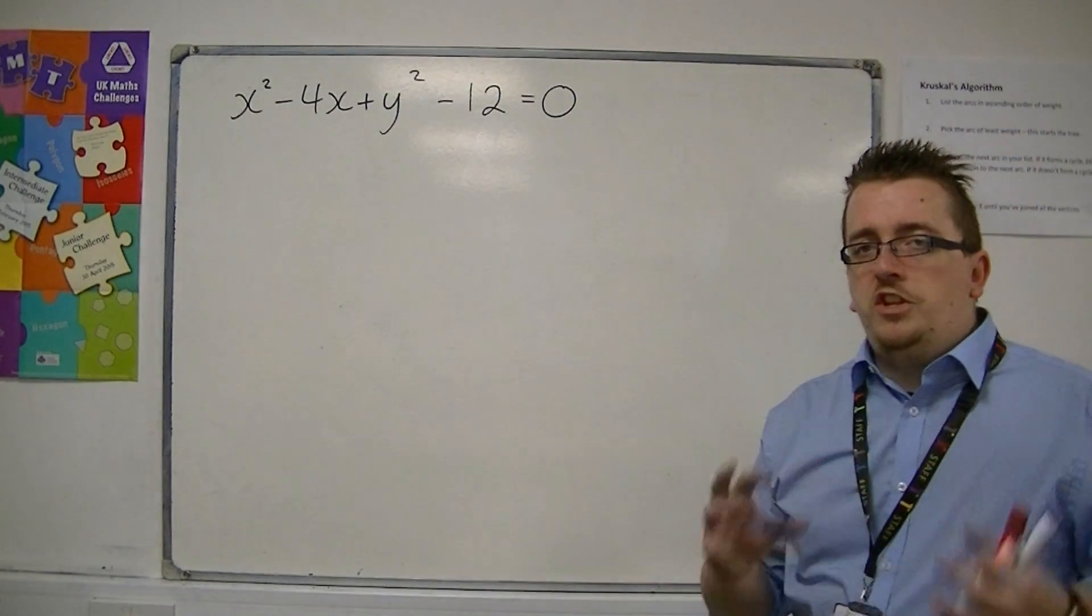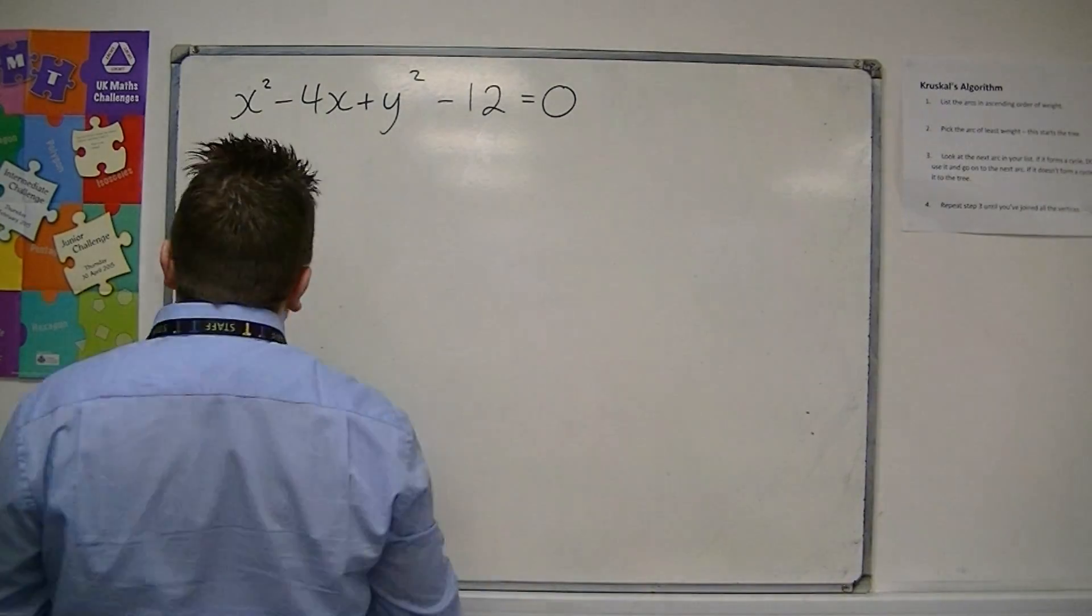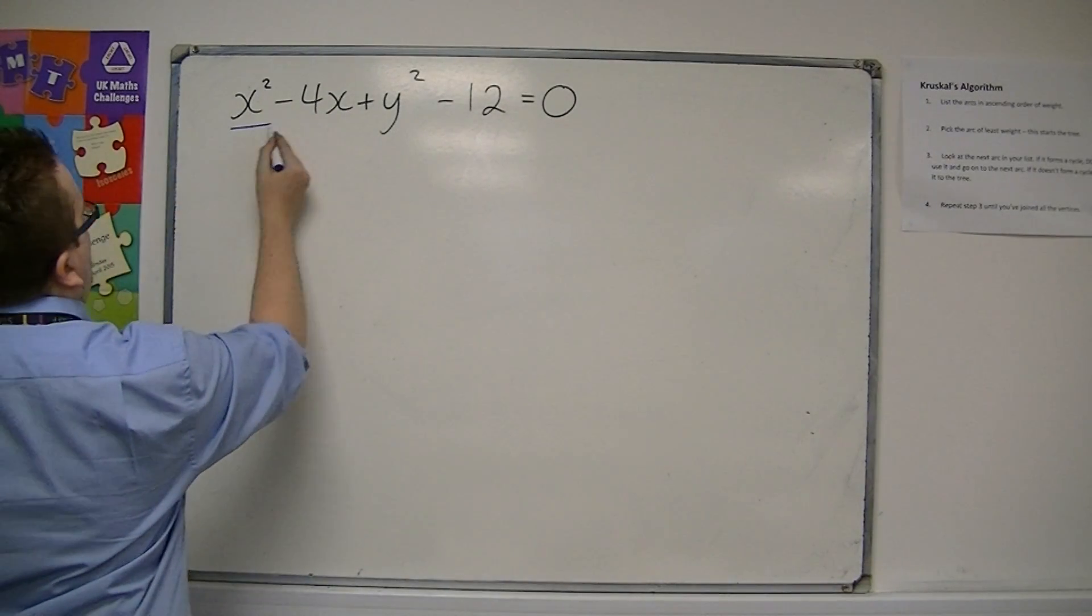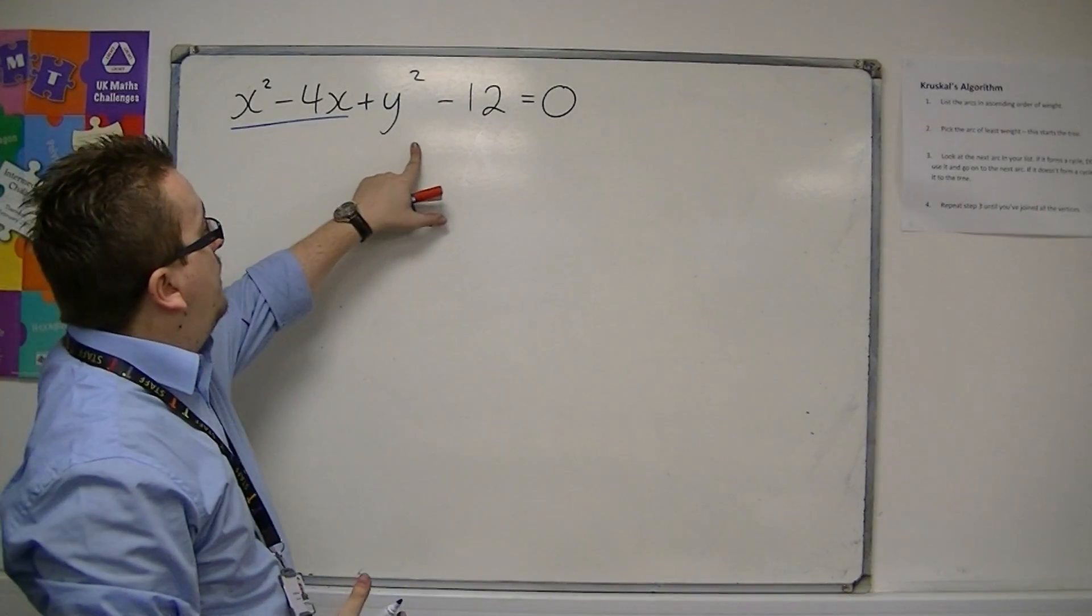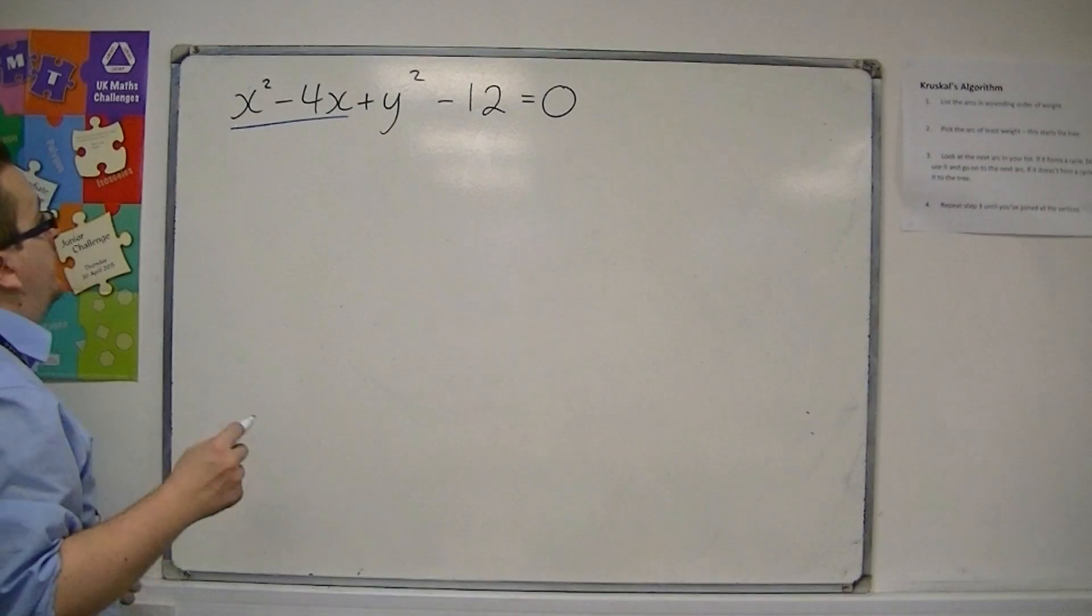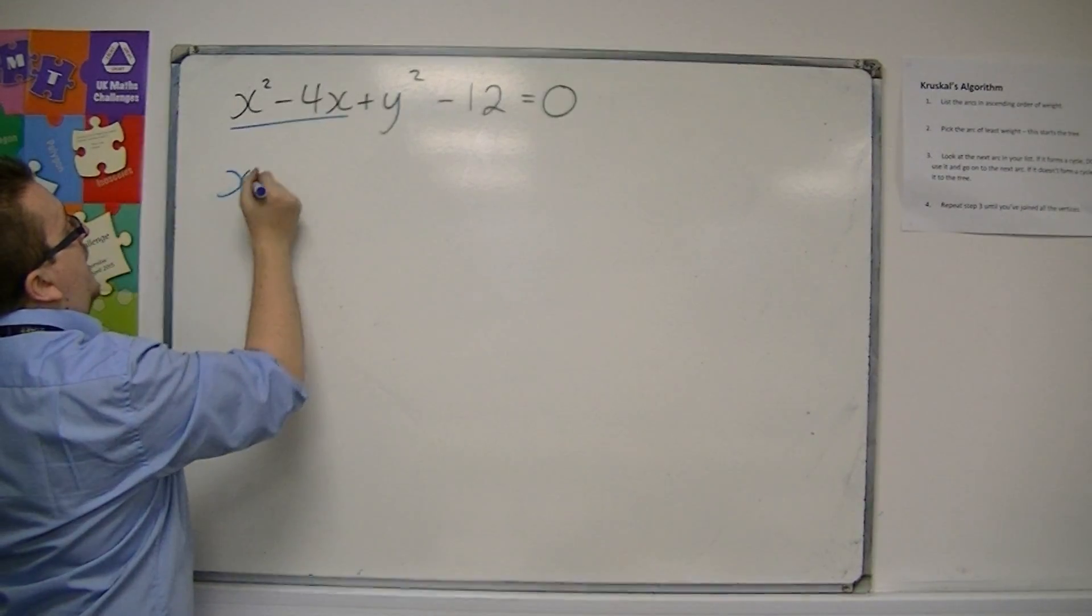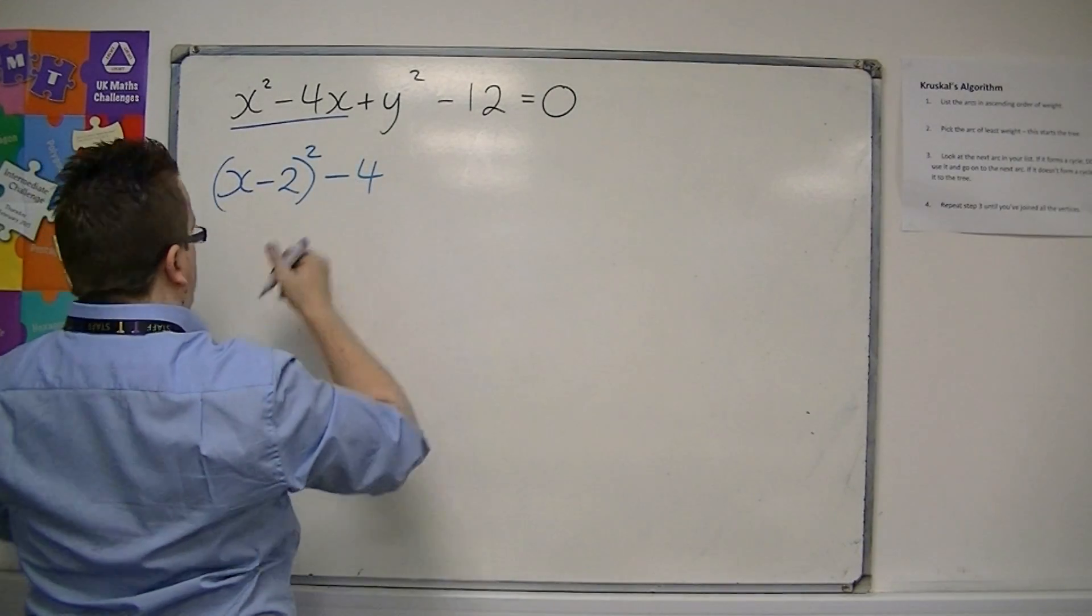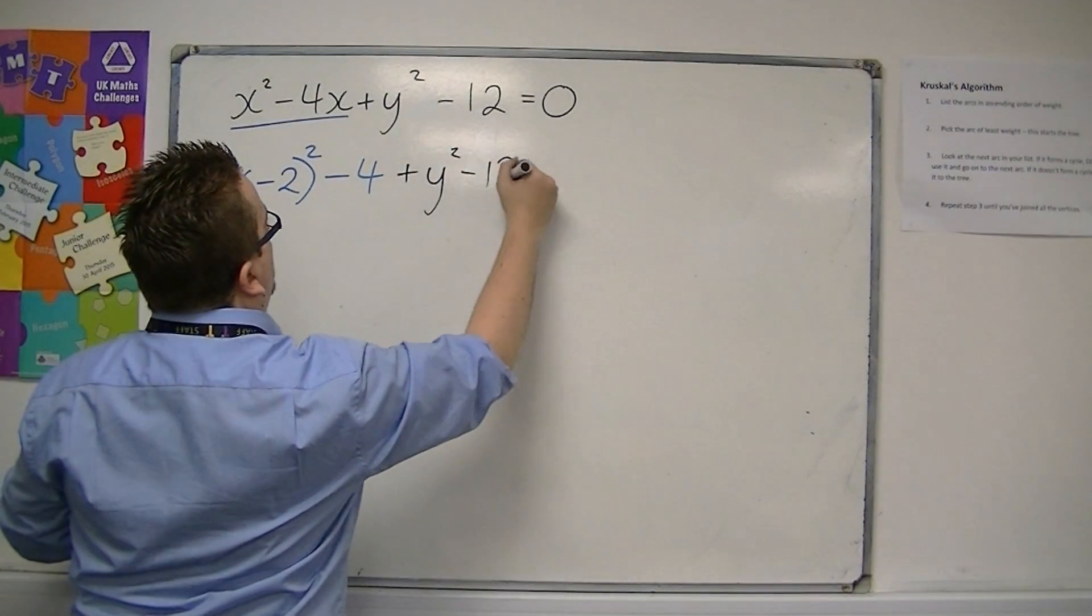So what you need to do in this particular case is use your skill of completing the square. And we're going to complete the square for the x's. We're going to leave the y's alone because there's only a y squared there, and that's perfectly fine. So we're going to complete the square for the x squared minus 4x, and we're going to get x minus 2 squared, take away 4. And we've still got that plus y squared minus 12 is 0.